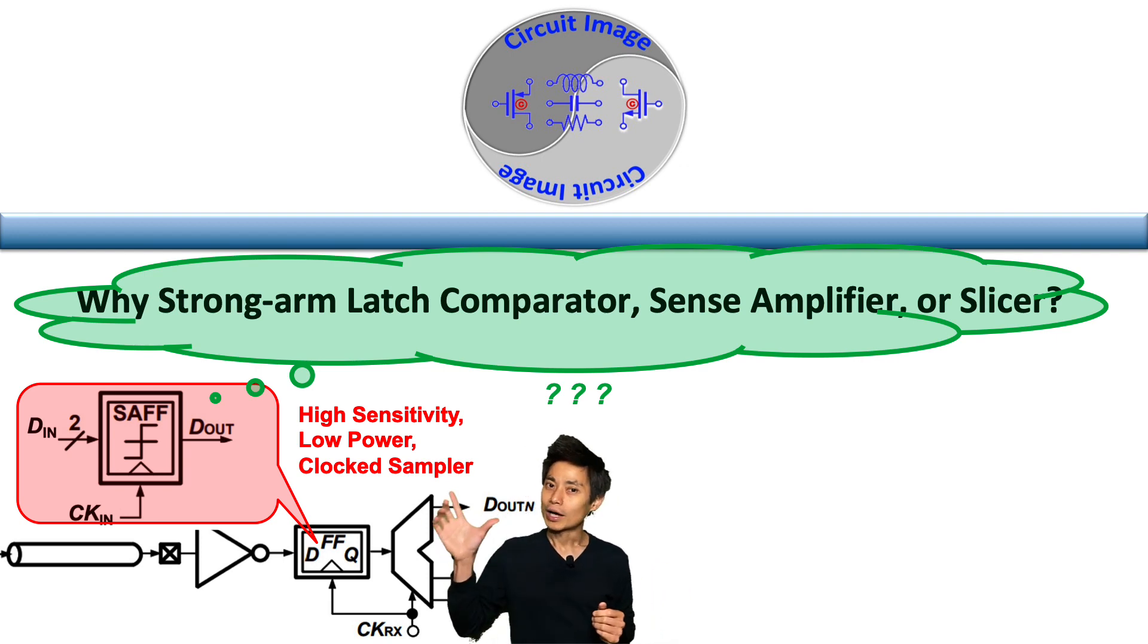In this video, we are narrowing down the topology for such a sampler, which is a strong-arm latch comparator, and it is also called a sense amplifier or slicer, since it's been widely used in analog-to-digital conversion, memory sensing, and sensor circuits.